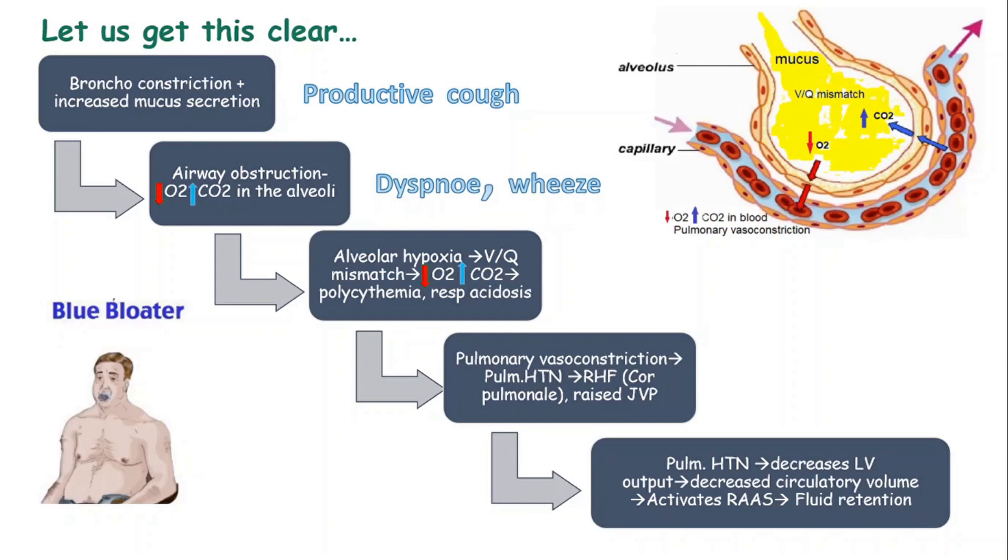Inside the alveolus, there is less oxygen and more carbon dioxide resulting in alveolar hypoxia. As there is less oxygen in the alveolus, the pulmonary capillaries or the blood vessels around the alveolus also receives less oxygen, resulting in ventilation perfusion mismatch. The body compensates by producing excess red blood cells or polycythemia, and because of increased carbon dioxide in the blood, there is respiratory acidosis.